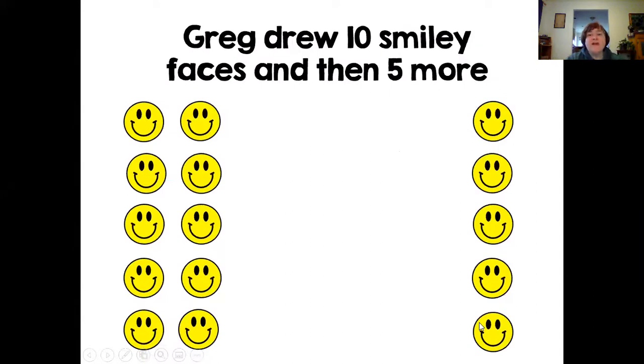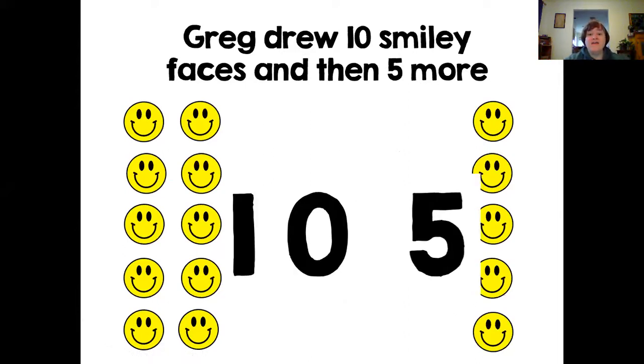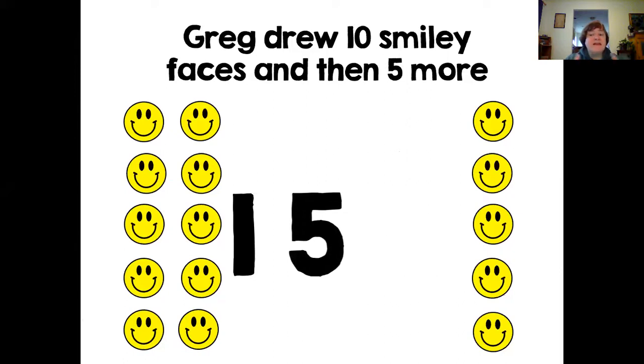So Gregory drew some smiley faces. He drew 10, and then he drew five more. And so I drew those out here on our page, and then we can take what we've been doing, and we can hide that zero. We have our 10, and we have five. 10, five. We hide the zero. And now we see the number that we know as 15.